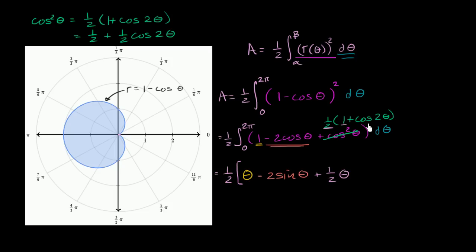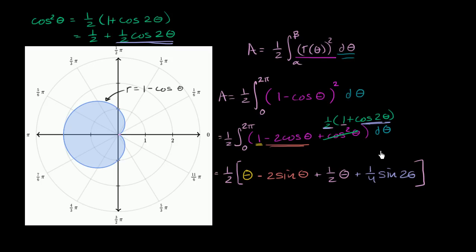The antiderivative of ½cos(2θ): the derivative of sin(2θ) is 2cos(2θ), so the antiderivative of cos(2θ) is ½sin(2θ), and multiplied by ½ gives ¼sin(2θ). I encourage you to verify: the derivative of ¼sin(2θ) gives two times ¼ = ½, giving ½cos(2θ). We evaluate all of this at 2π and at 0.